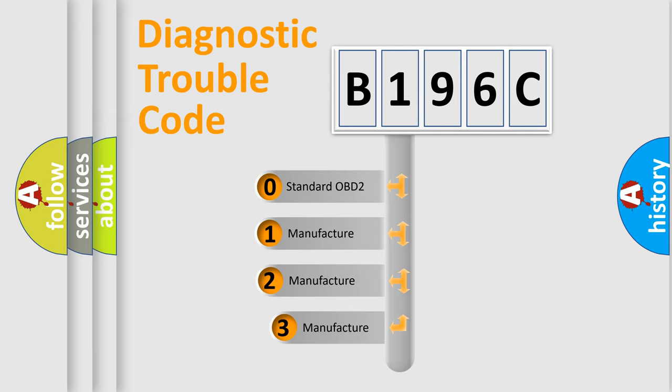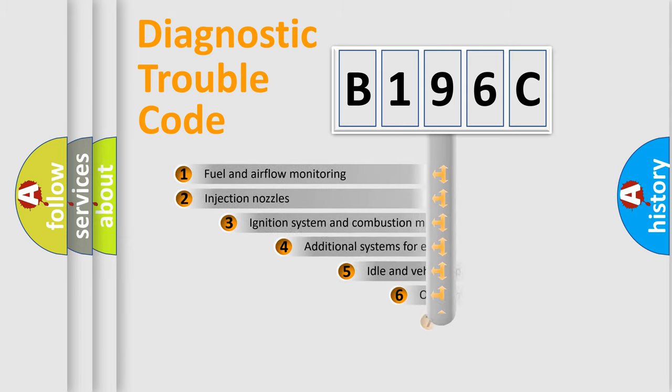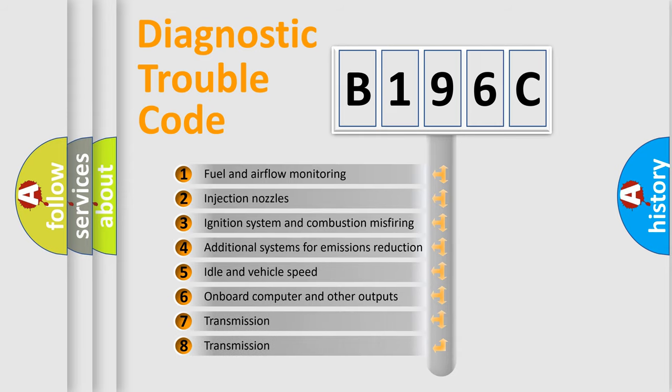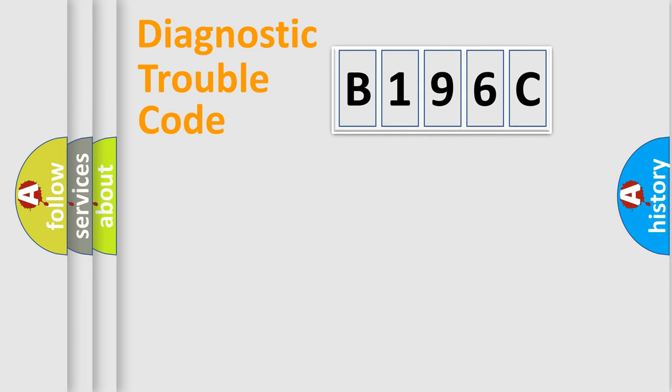If the second character is expressed as zero, it is a standardized error. In the case of numbers 1, 2, or 3, it is a more prestigious expression of the car-specific error. The third character specifies a subset of errors.